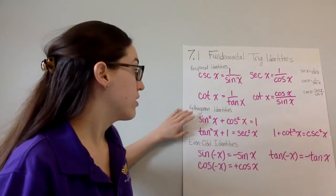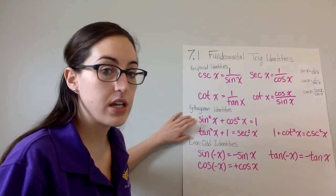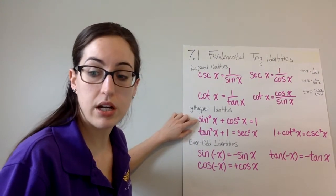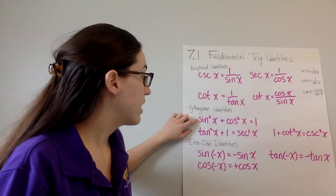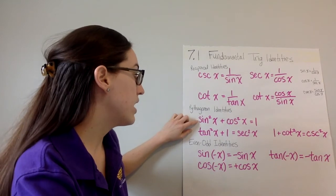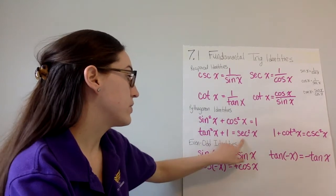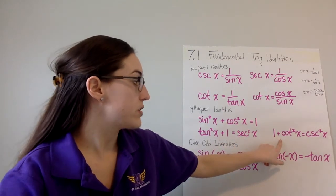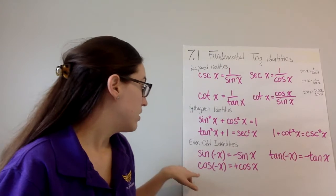Then we have our Pythagorean identities. These come from the unit circle. The most standard and common one, we'll use it in our next example: sine squared x plus cosine squared x equals 1. And then tan squared x plus 1 equals secant squared x. 1 plus cotangent squared x equals cosecant squared x.